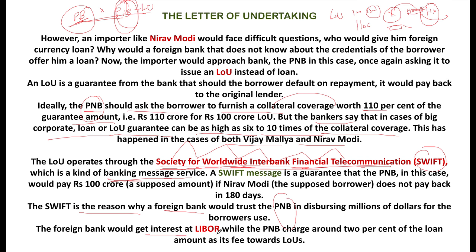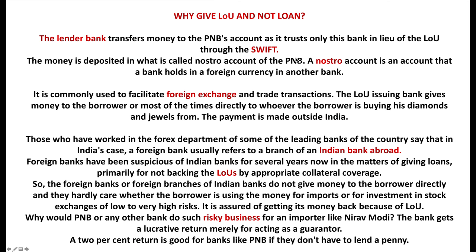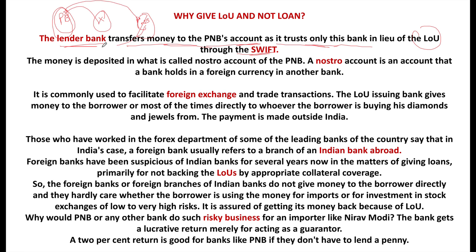The foreign bank gets interest at LIBOR, while PNB charges around 2% of the loan amount as its fee for issuing the LOU. So PNB also earns income from this arrangement, even though the borrower is not taking the loan directly from PNB. The lender bank transfers the money to PNB's account — as it trusts only PNB through the SWIFT LOU. So the Paris Bank gives the loan to Punjab National Bank, specifically into PNB's Nostro account.